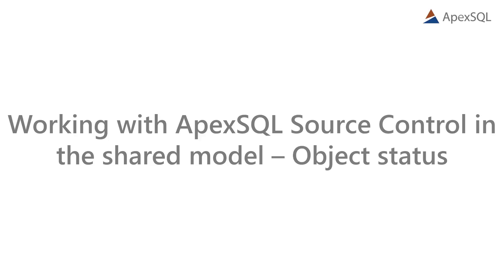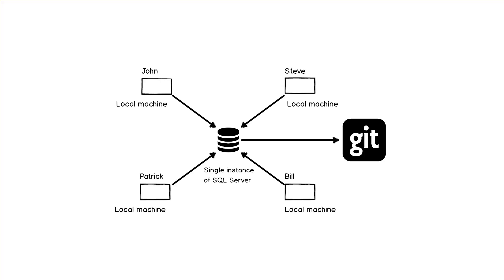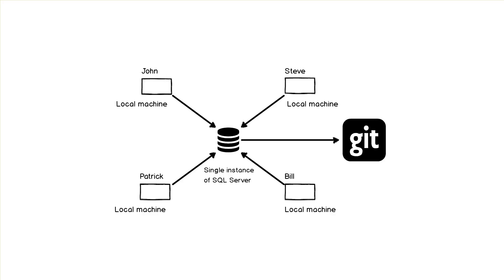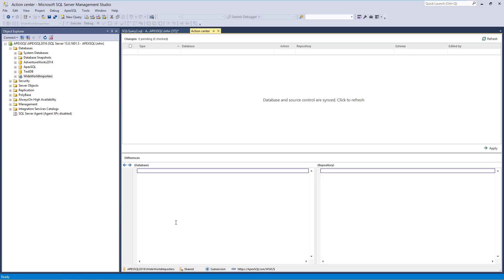Hello and welcome to this Apex SQL Source Control video, where we'll show you one of the options specifically related to the Shared Development Model: the Object Status option. When working with the Shared Model, the main goal is to keep all developers informed about the status of objects that are version-controlled. This allows transparency inside the team as it provides information about object usage. Having real-time information about which object is edited, checked out, or locked is essential and can save a lot of time. Apex SQL Source Control provides additional markup in the Object Explorer pane for all version-controlled objects.